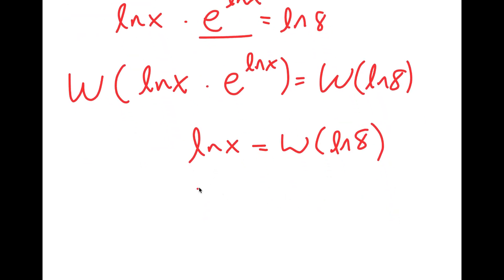And then now I'm going to take e to the power of both sides. So I get e to the power of ln x is equal to e to the power of W of ln 8. And e and ln cancel out. So I get x is equal to e to the power of W of ln 8. So this is my value of x.